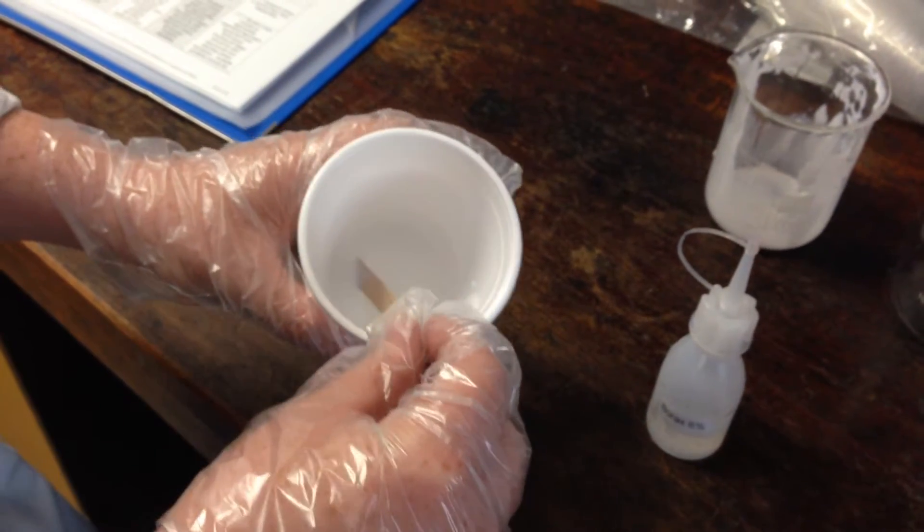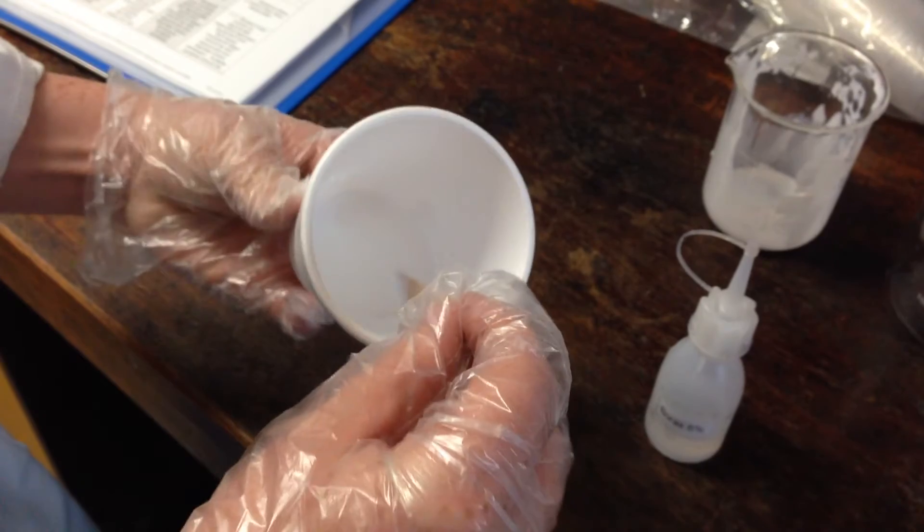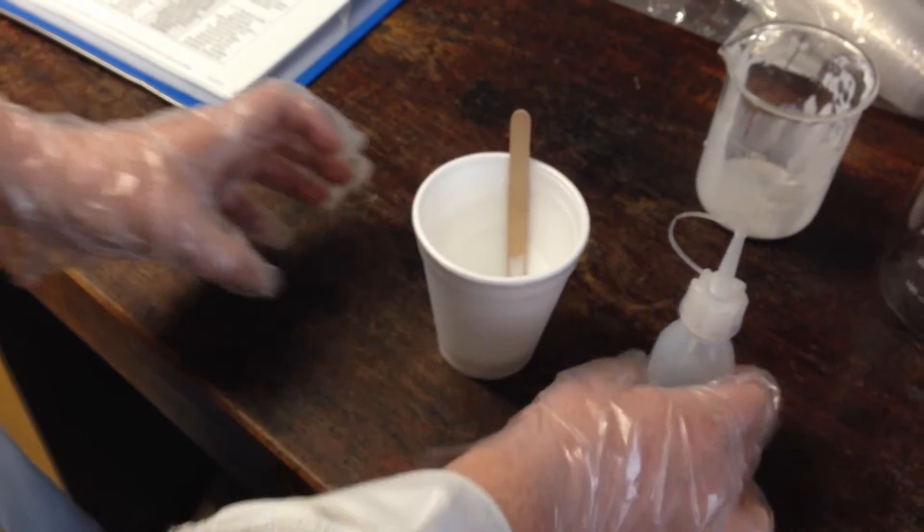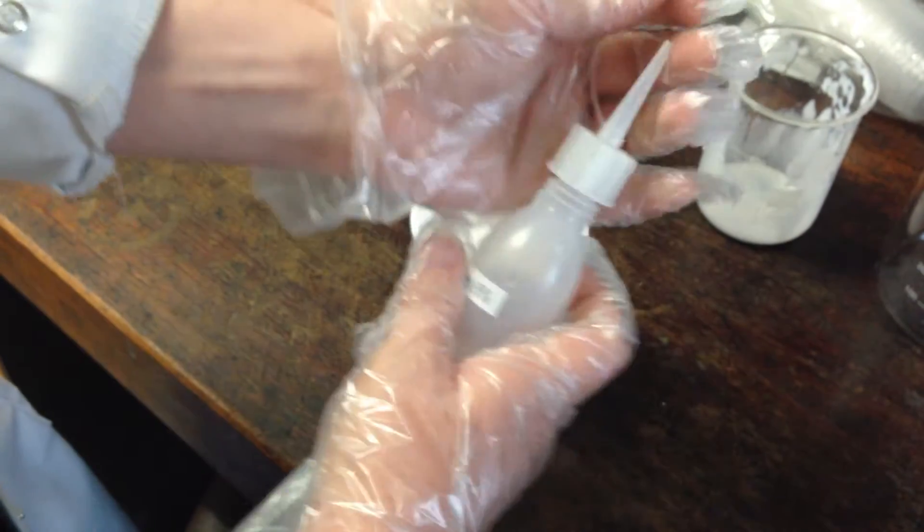So in this practical, we're going to be looking at polymers and cross-linking. Here I have some PVA glue and water, just a polystyrene cup with some plastic, and here I have some Borax solution.